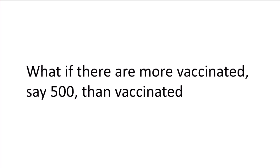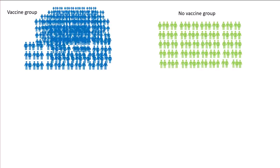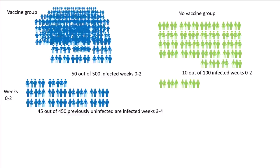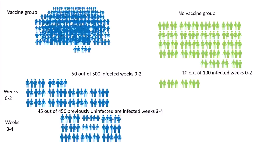Things can get even more ridiculous if there are more vaccinated — say 500 — than unvaccinated. Here are 500 in the vaccine group and 100 in the no-vaccine group. So 50 out of 500 are going to be infected in weeks zero to two, and 10 out of 100 are going to be infected in the no-vaccine group. Then 45 out of the 450 previously uninfected are going to be infected in weeks three to four, and 9 out of 90 previously uninfected from the no-vaccine group are infected in weeks three to four.